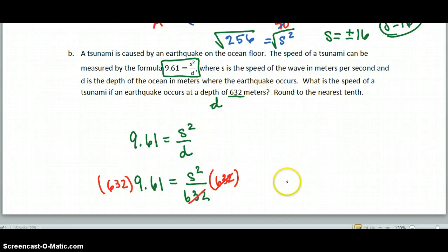Now we're solving for S. Class, you're going to have to finish this on your own. We want to take the square root after we multiply here, and know that S is measuring the speed of a tsunami, so S cannot be negative. So give me your best answer tomorrow, and you all have a great day.